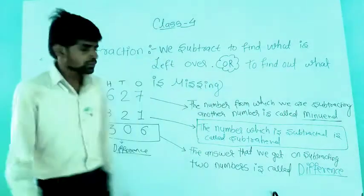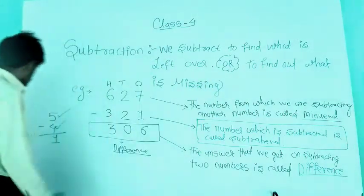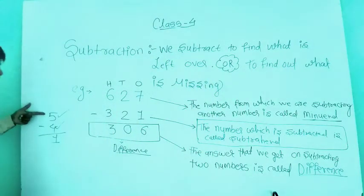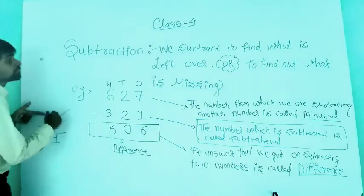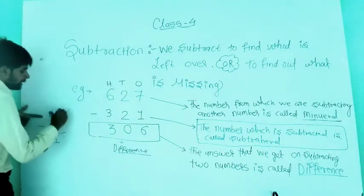So here, 5 is your minuend, 4 is your subtrahend, and 1 is the difference.